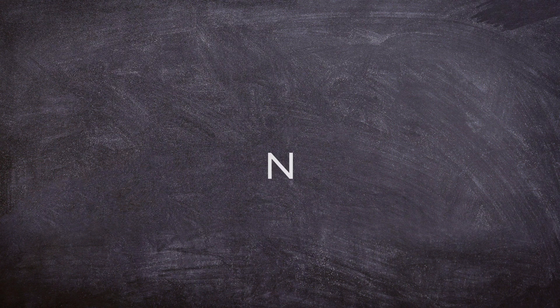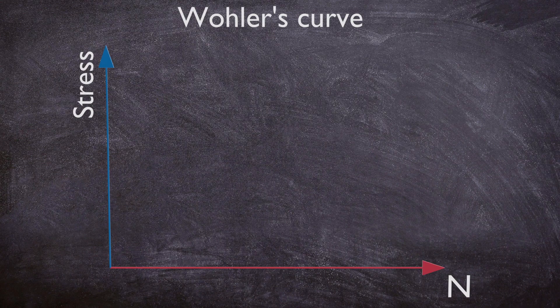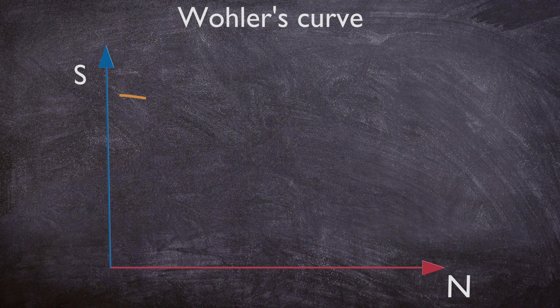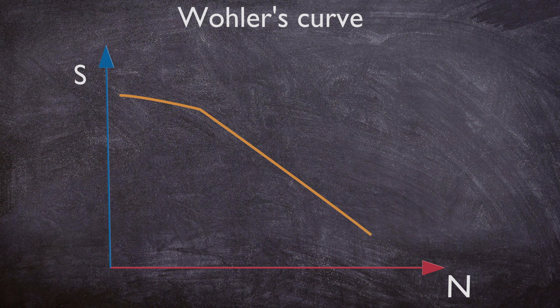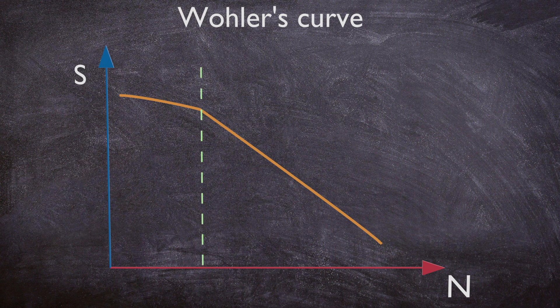The number of loading cycles before failure is known as the material's fatigue life, and it can be represented on the Wohler curve, or SN curve, which plots the relationship between the applied stress amplitude, S, and the number of cycles to failure, N. The Wohler curve illustrates how materials can endure high stresses for a low number of cycles, but require much lower stresses to last for millions of cycles, indicating the material's fatigue limit.